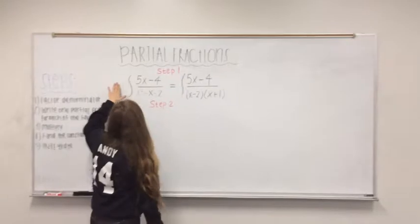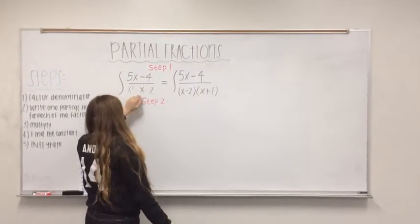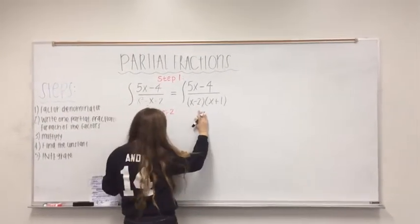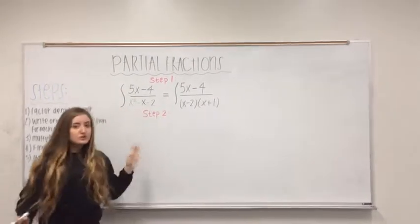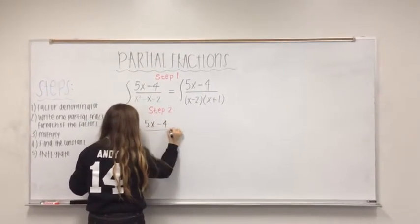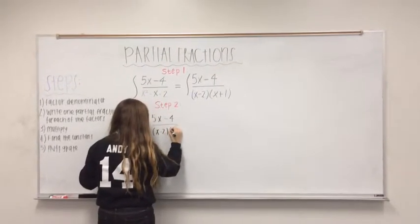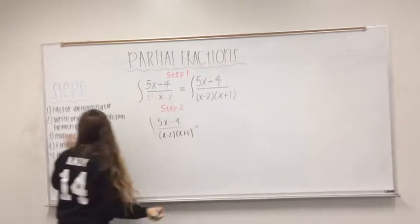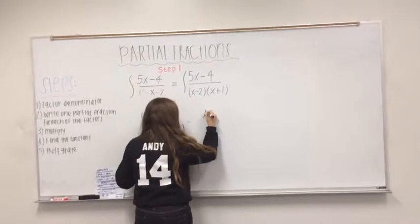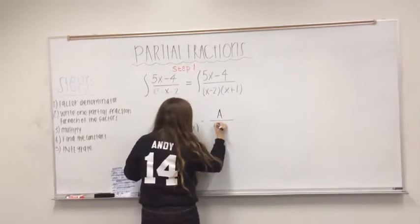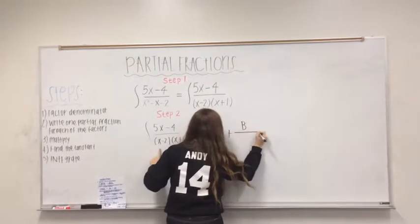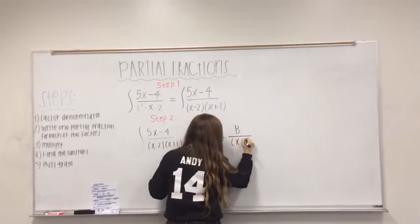Problem number two is the integral of 5x minus 4 over x squared minus x minus 2. The first step is to factor the denominator, which factors to x minus 2 times x plus 1. In step two, we write the equation as 5x minus 4 over x minus 2 times x plus 1, and then write one partial fraction for each factor: A over x minus 2 plus B over x plus 1.